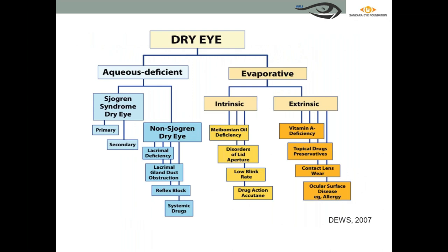Before understanding management, let's look at the classification of dry eye. As per the dry eye workshop of 2017, dry eye is classified into two categories: aqueous deficient dry eye and evaporative dry eye. Since it is multifactorial, a person with aqueous deficiency can also have evaporative dry eye simultaneously.